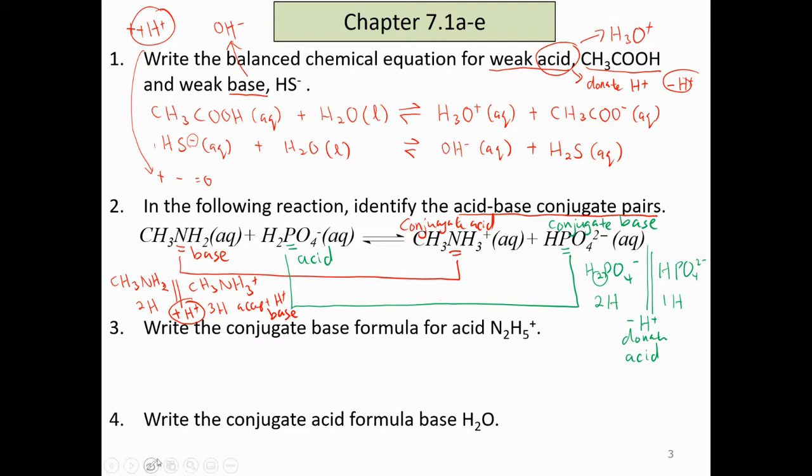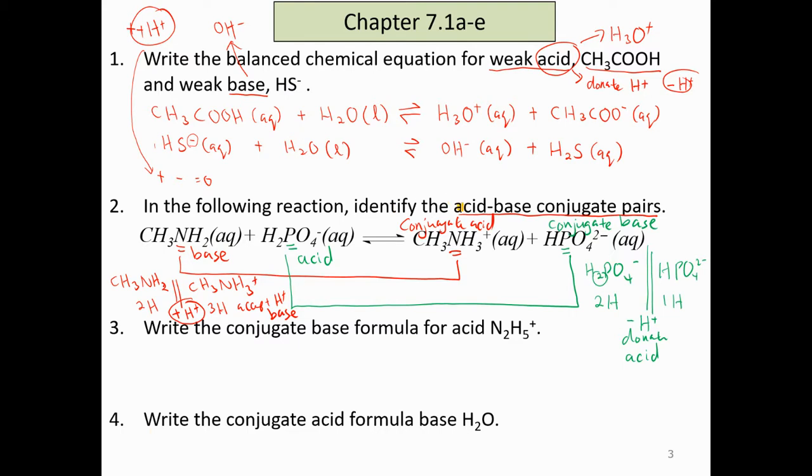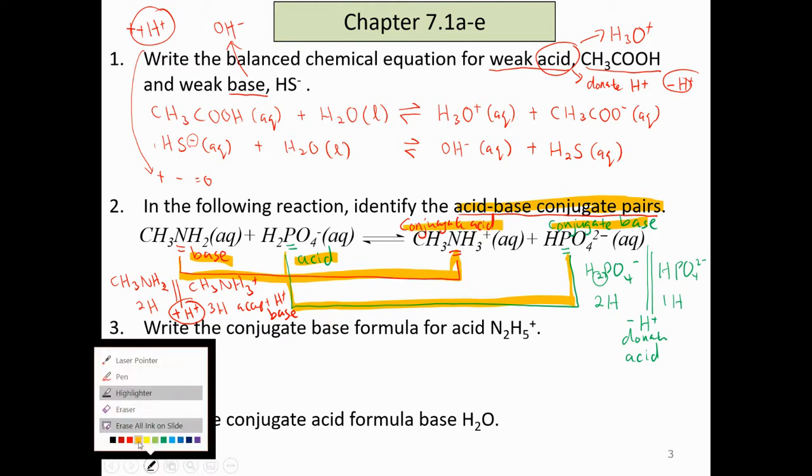So remember for this type of question, if they ask to identify acid base conjugate pairs, you must show the pair by using lines. And then don't forget to label: acid conjugate base, base conjugate acid. Now let's move on to another one.